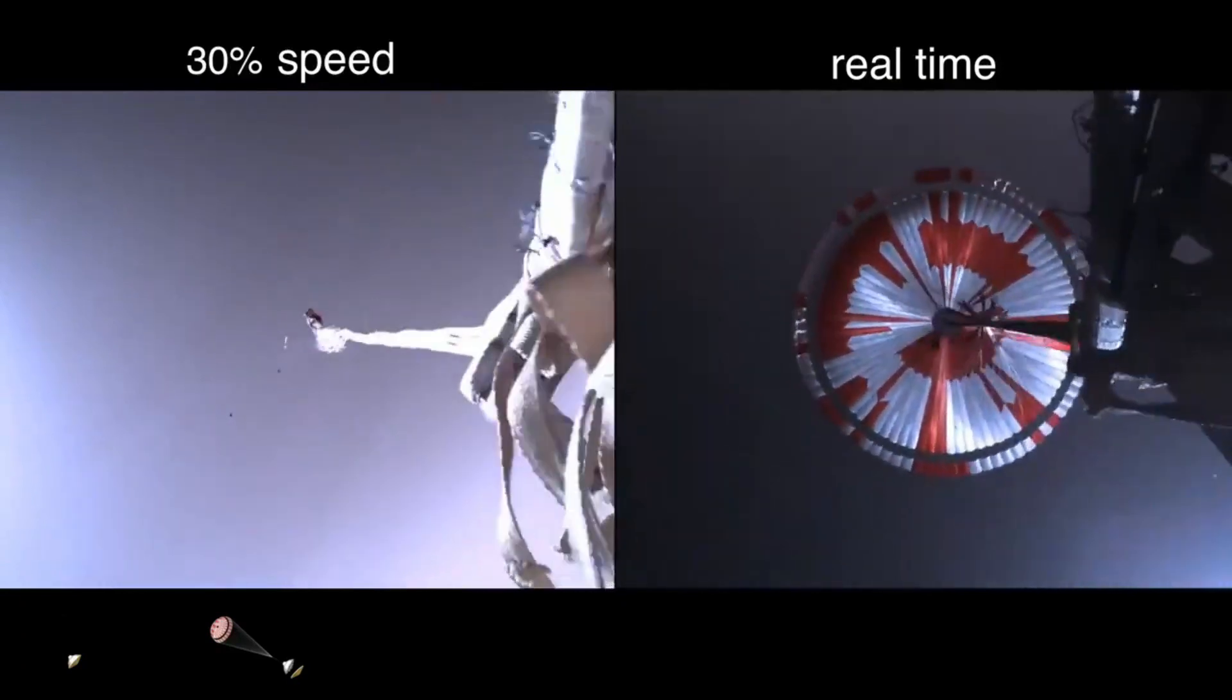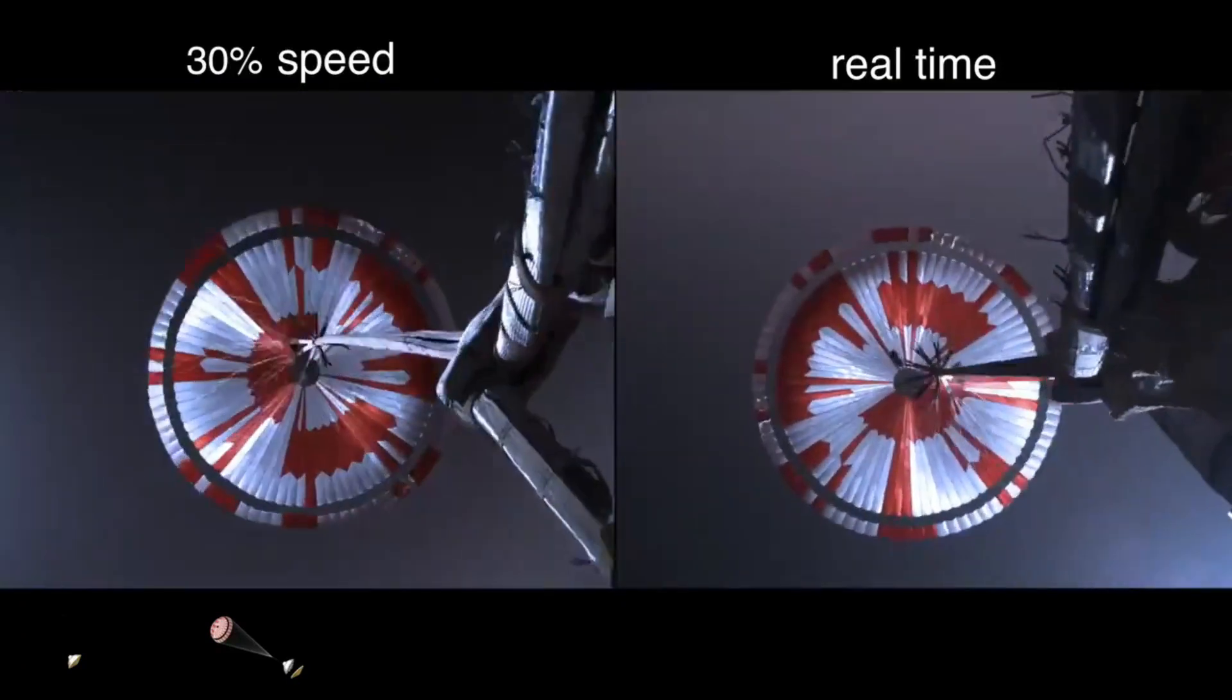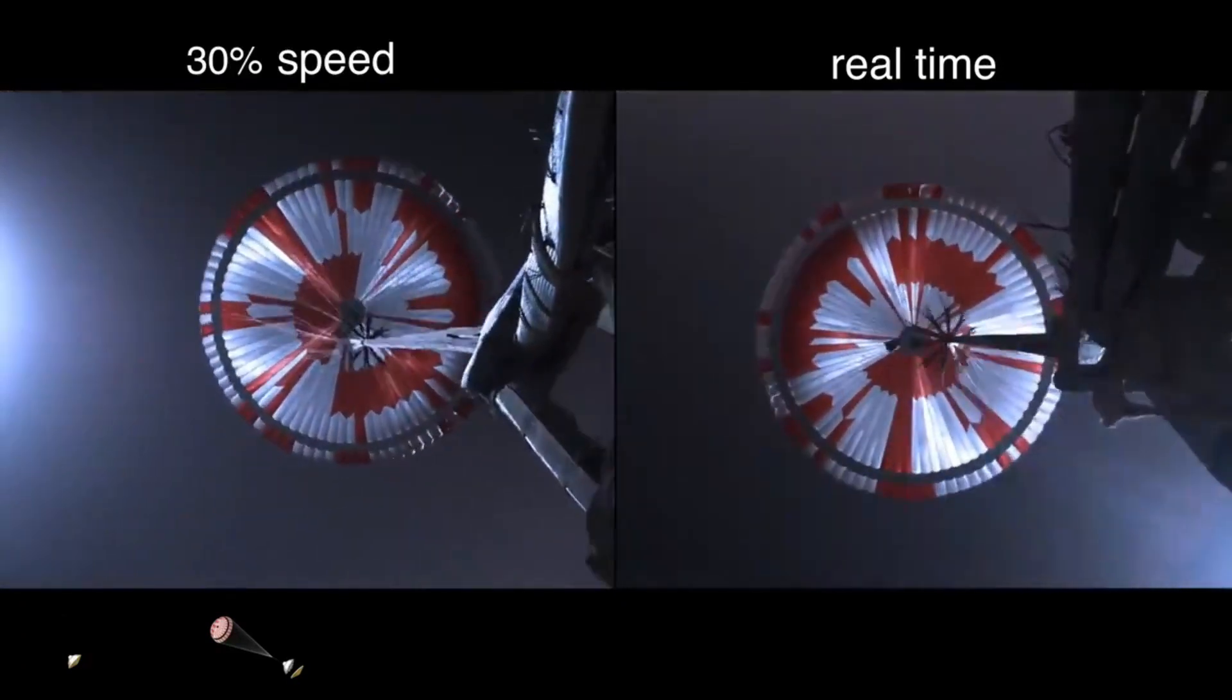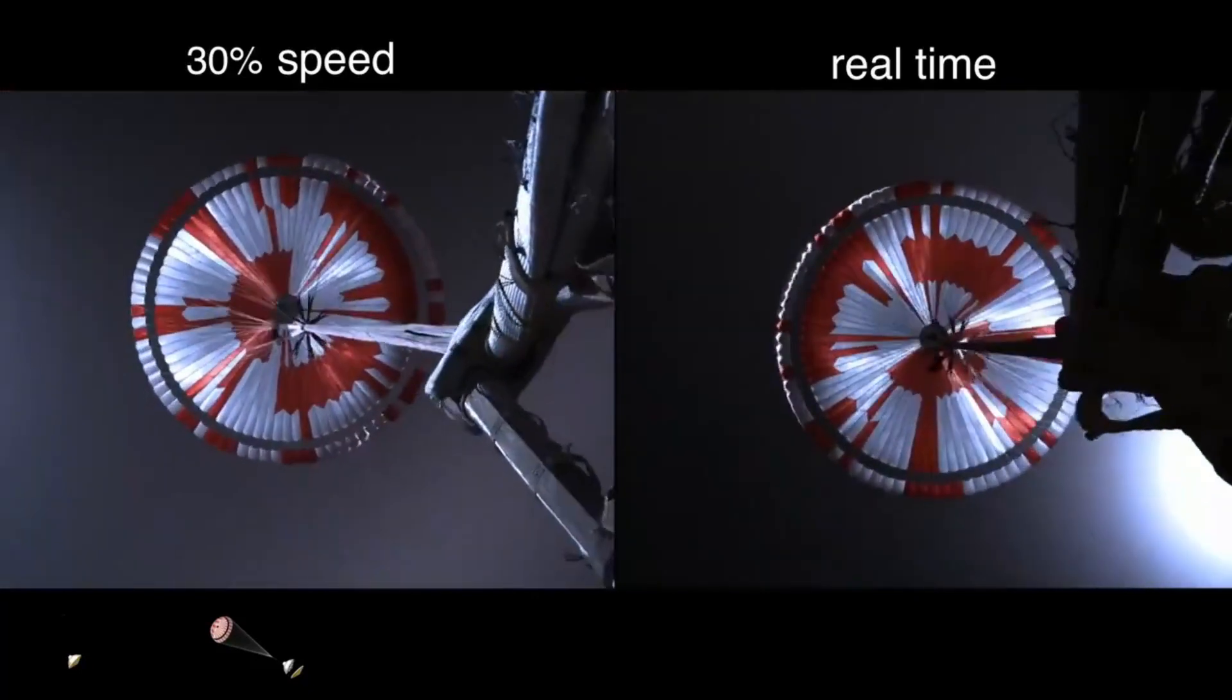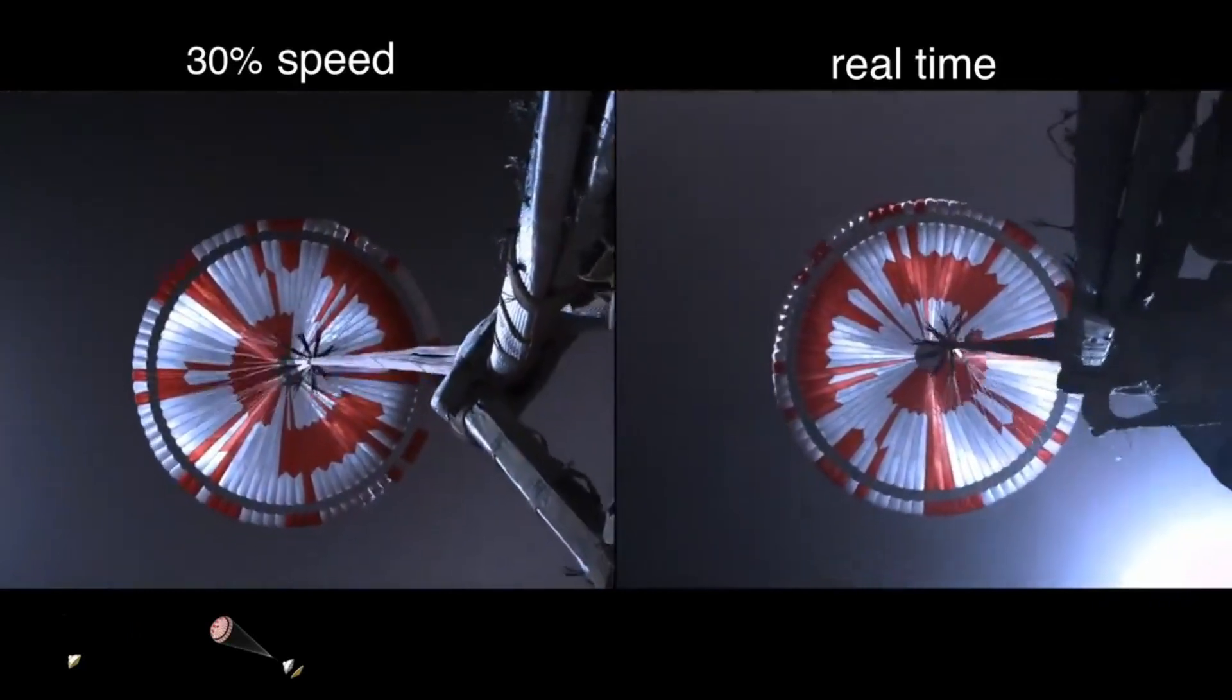The navigator indicates chute deployed. The navigation has confirmed that the parachute has deployed, and we are seeing significant deceleration in the velocity. Our current velocity is 440 meters per second at an altitude of about 12 kilometers from the surface of Mars.